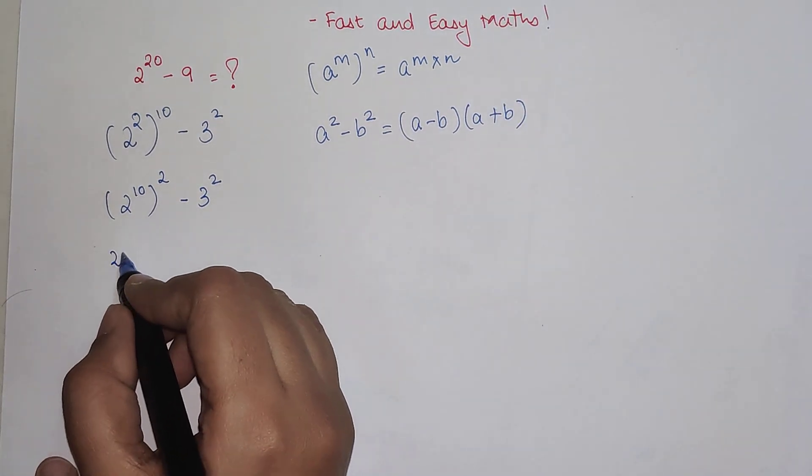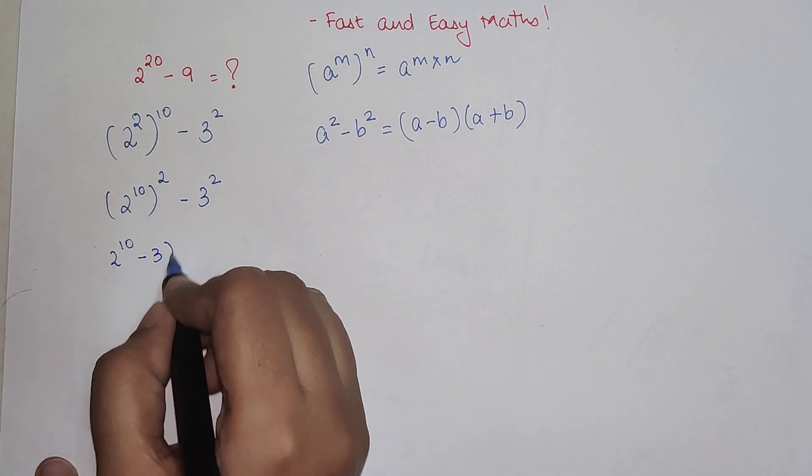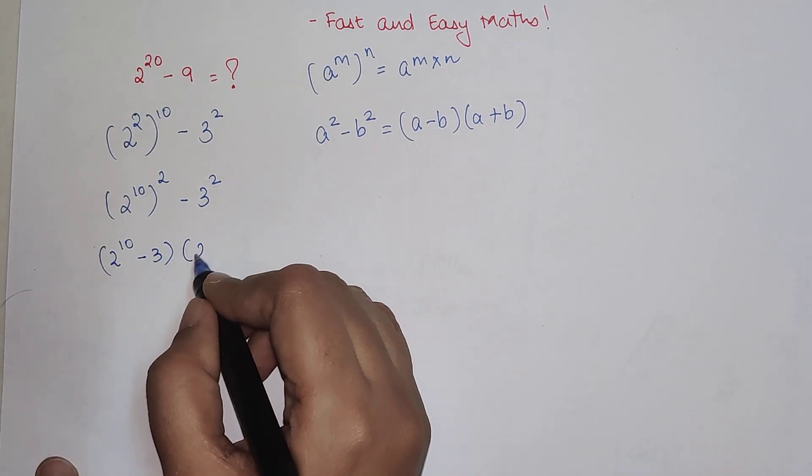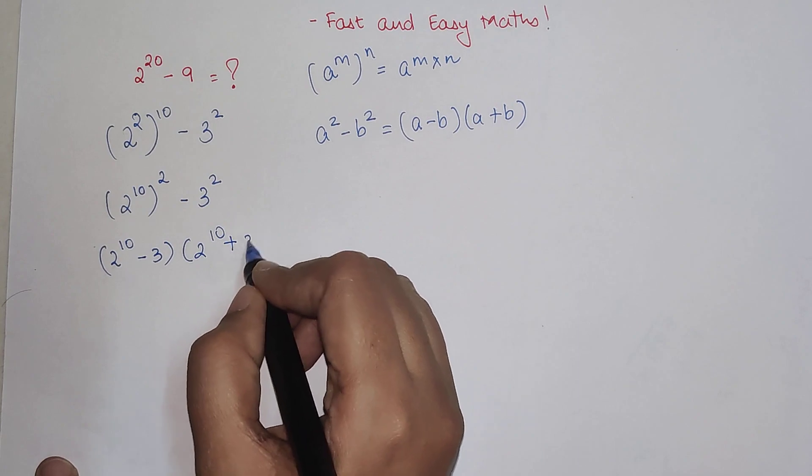This now comes across as (2^10 - 3) multiplied by (2^10 + 3).